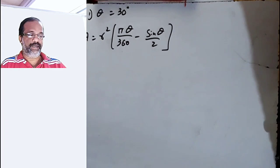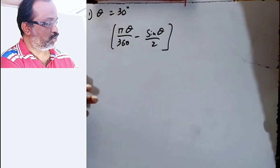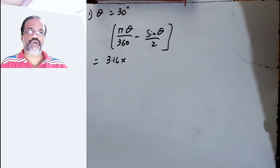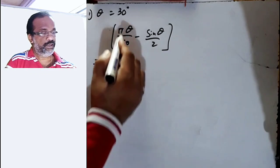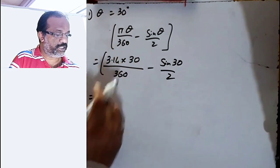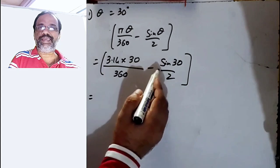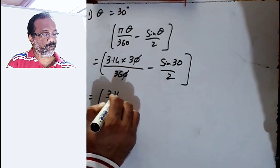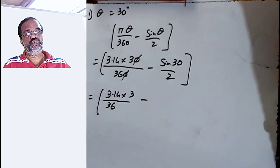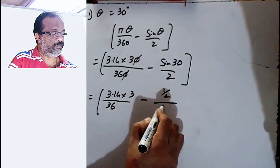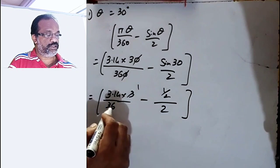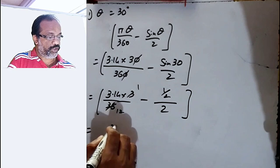When theta is 30°, we substitute into the bracket: 3.14 × 30/360 − sin 30/2. Do not do any cancellation yet — just cancel the zeros. So we get 3.14 × 3/36 − sin 30/2. Sin 30 value is 1/2, so we have 3.14/36 − (1/2)/2. Now let us do some cancellations: 3 twelves are 36, giving 3.14/12. And 2×2 gives 1/4.